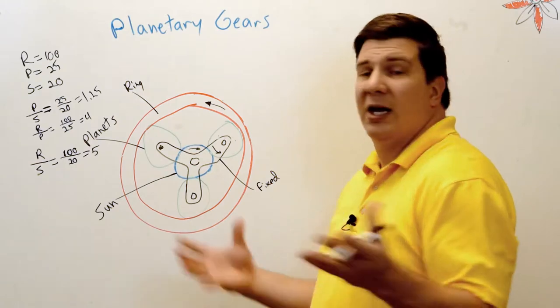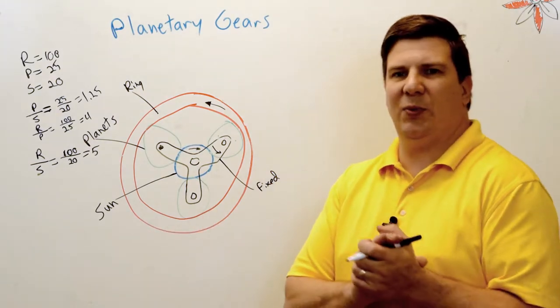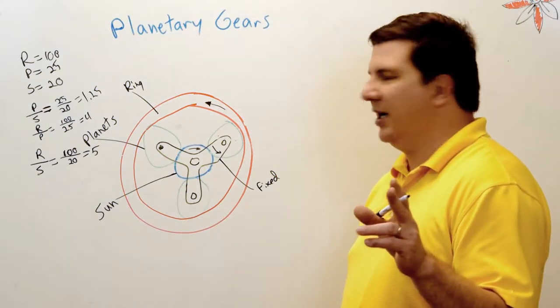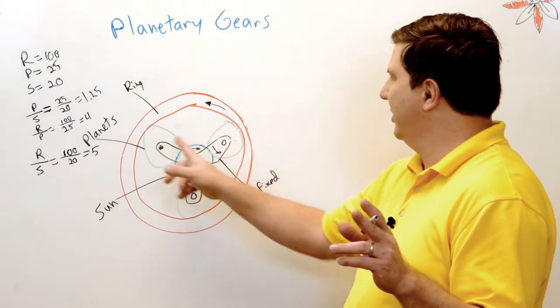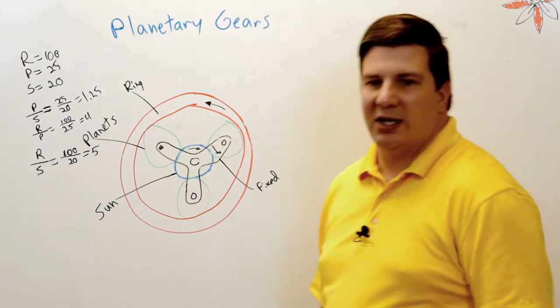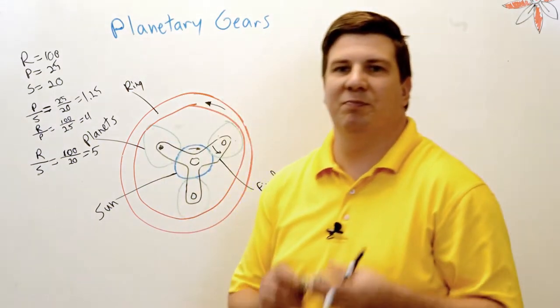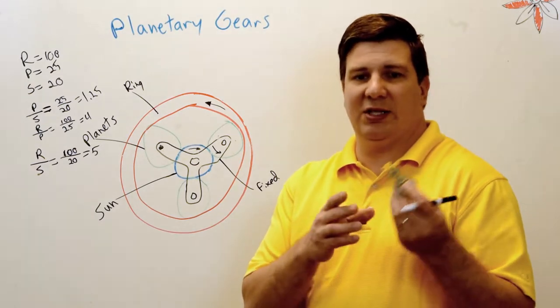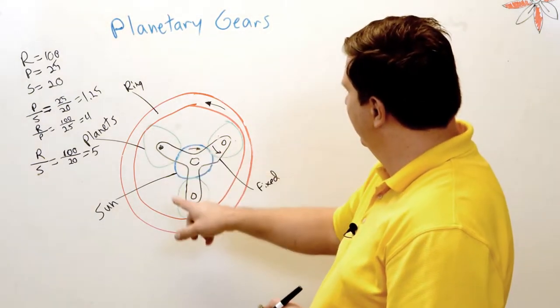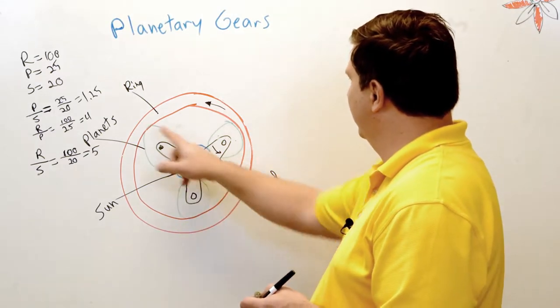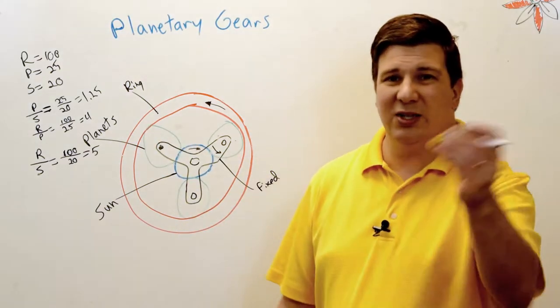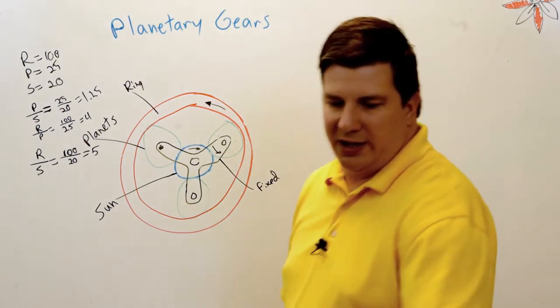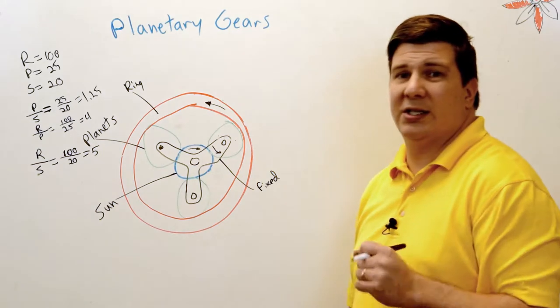One thing you should probably be picking up on now is I can transmit three times the load I could compared to what it was. The tangential force now exists at three locations - one, two, three interfaces there, one, two, three interfaces on the outside. So I got three times the load. If I add another set of gears, four times.